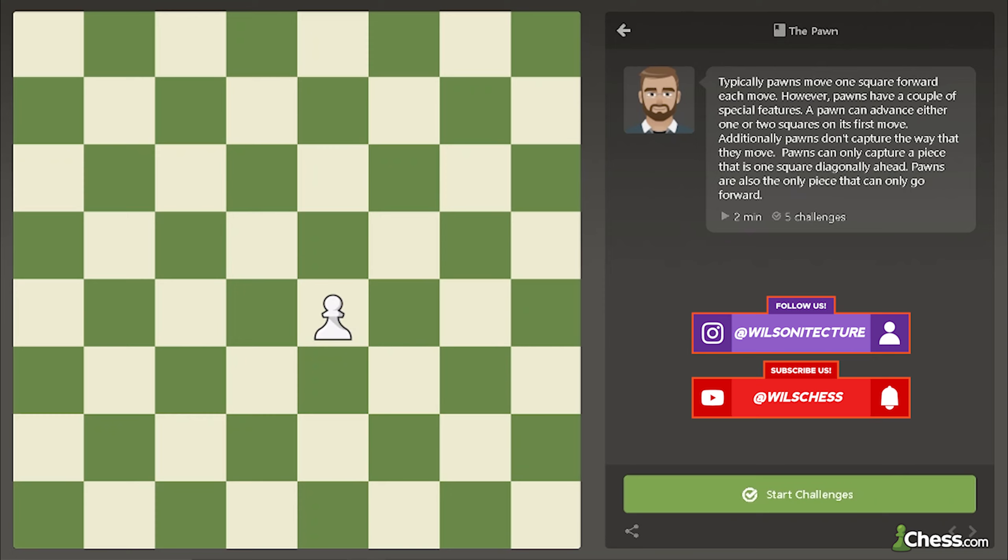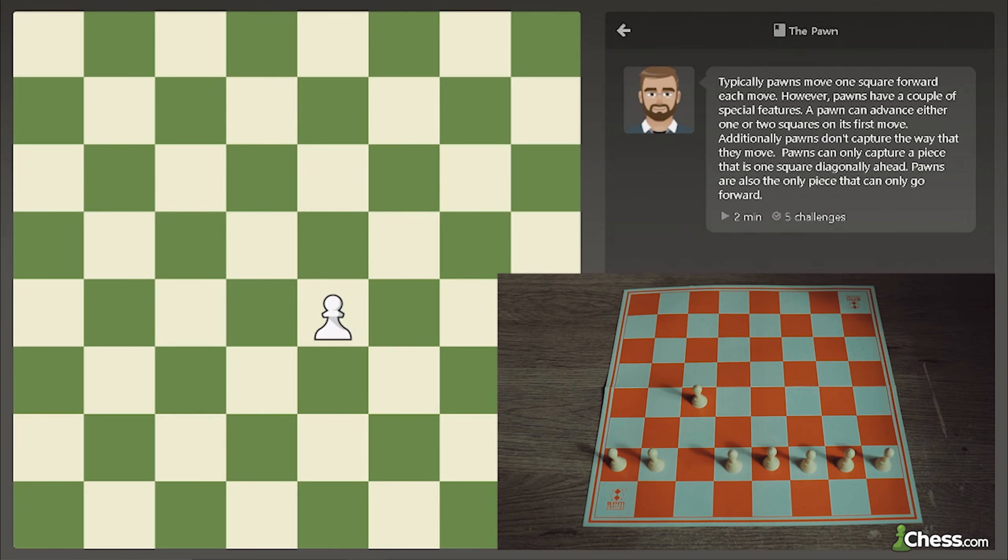Remember, the pawn can choose to advance one or two squares only on the first move. On all other moves, the pawn advances one square. Pawns are also the only piece in chess that cannot move backwards.